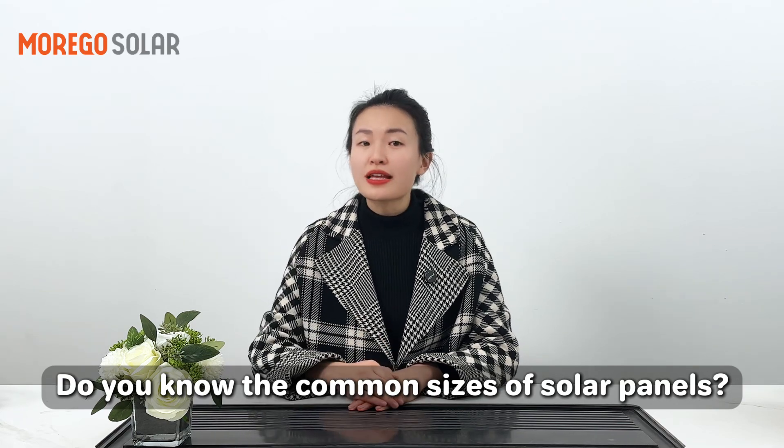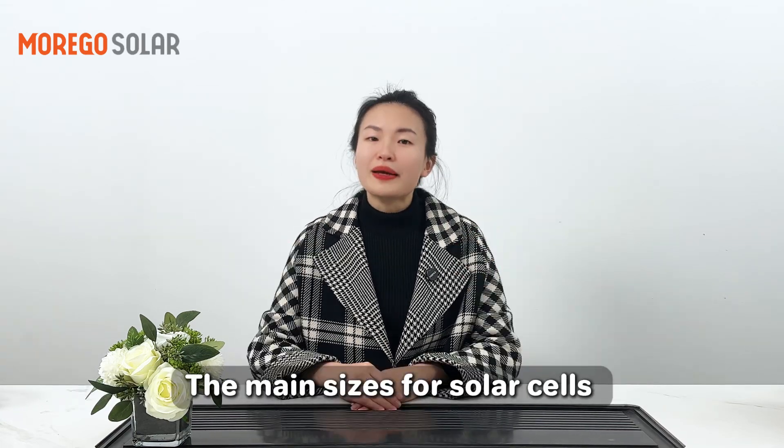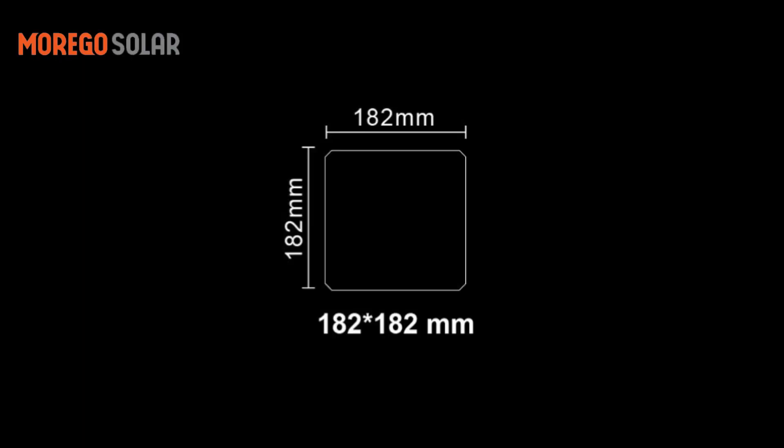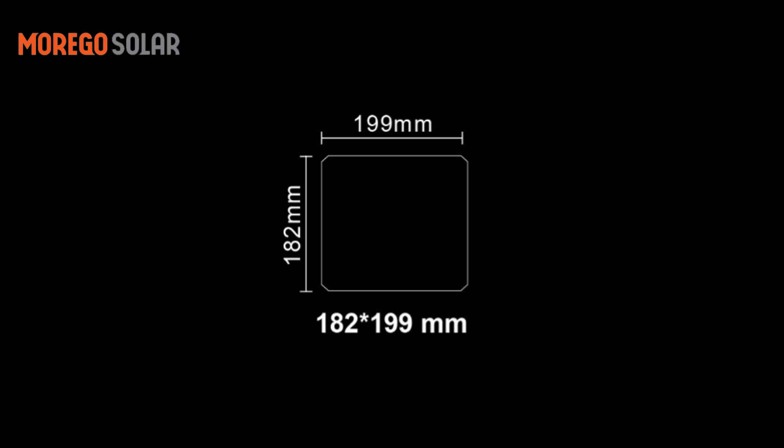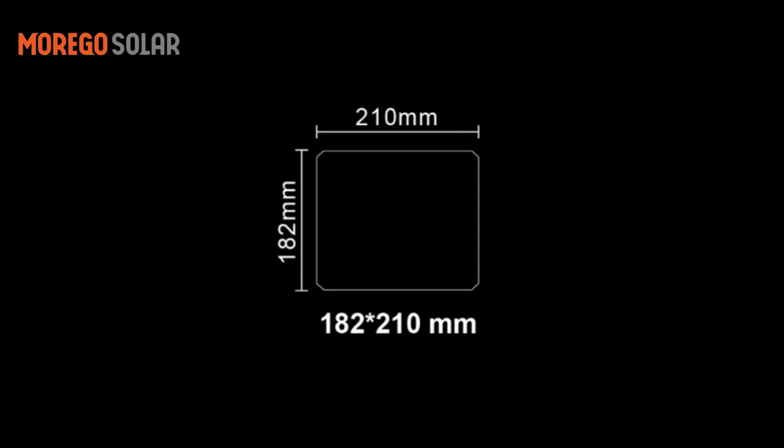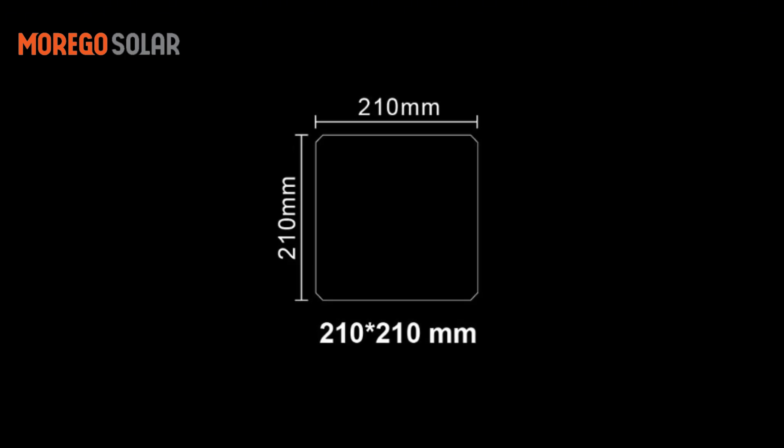Do you know the common size of solar panels? Let's quickly break it down. The main sizes for solar cells are 182×182mm, 182×199mm, 182×210mm, and 210×210mm.